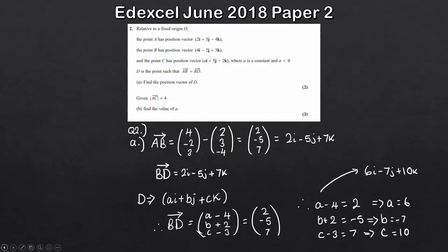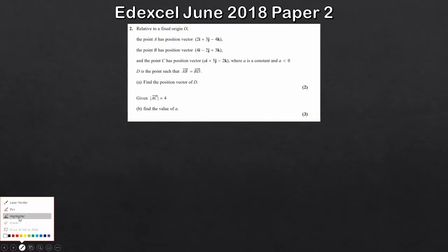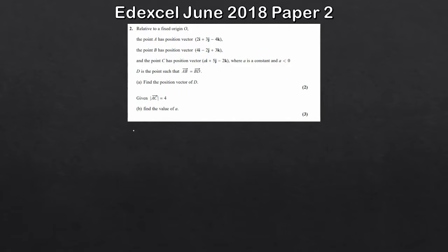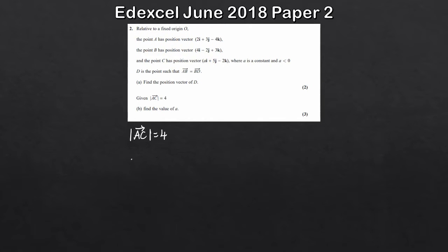Let's tackle part B. We're given that the magnitude of the vector AC is equal to 4, and we need to find the value of A. So the first thing I can do is work out the vector AC — obviously it will be in terms of A because we don't know its value. That's going to be the position vector at point C minus the position vector at point A. So that's A, 5, minus 2, minus 2, 3, minus 4.